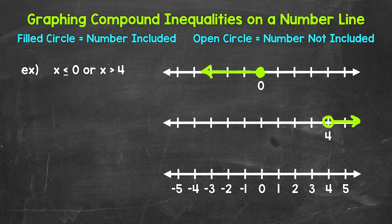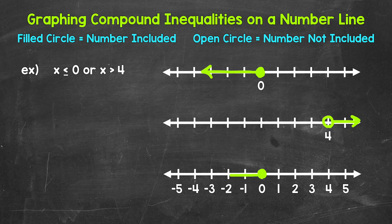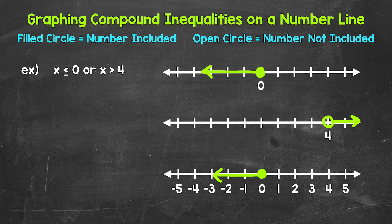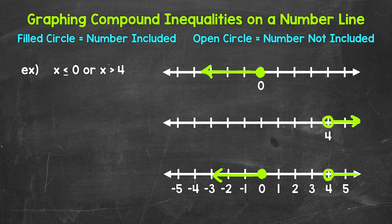Now, since this is a compound inequality, we need to combine these. We're going to graph them on the same number line. So we have x is less than or equal to 0. So we need that filled circle at 0 with the arrow going left. And then we have x is greater than 4. So we need that open circle with the arrow going right.